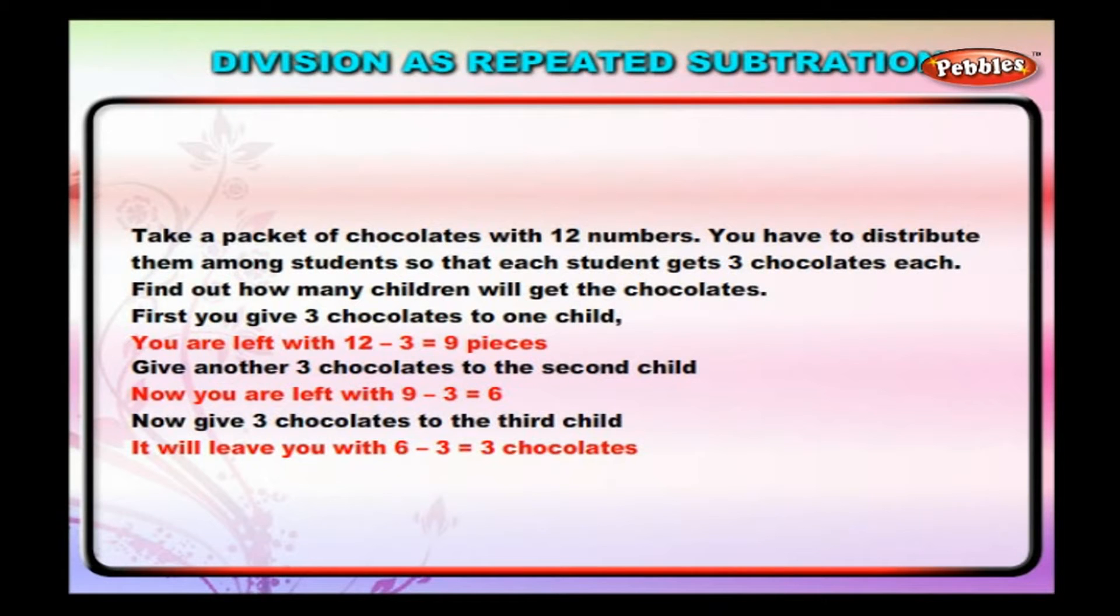Now, give 3 chocolates to the third child. It will leave you with 6 minus 3 which is equal to 3 chocolates. You have only 3 chocolates now.